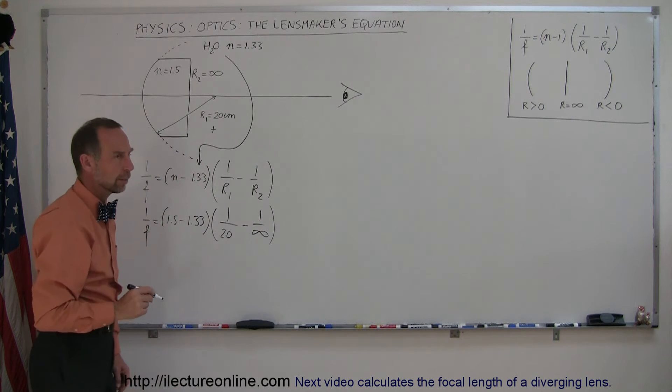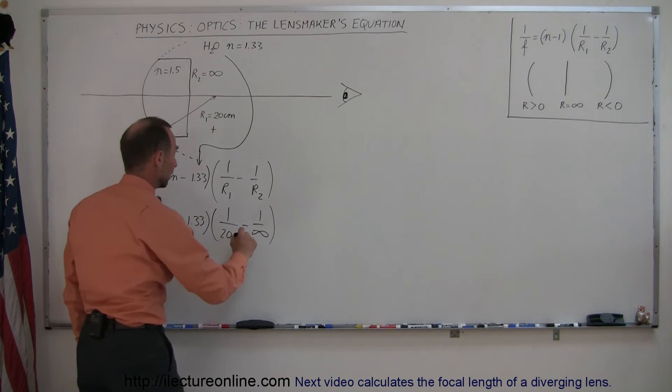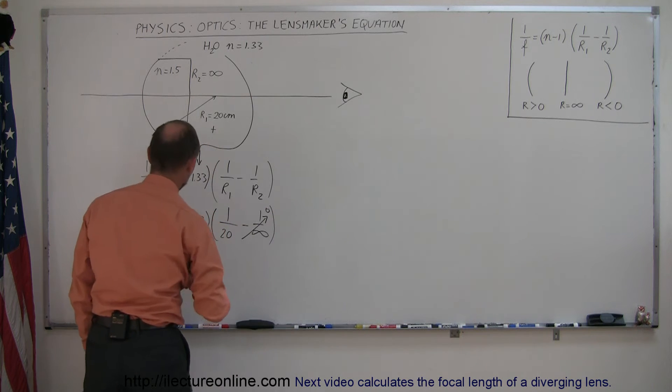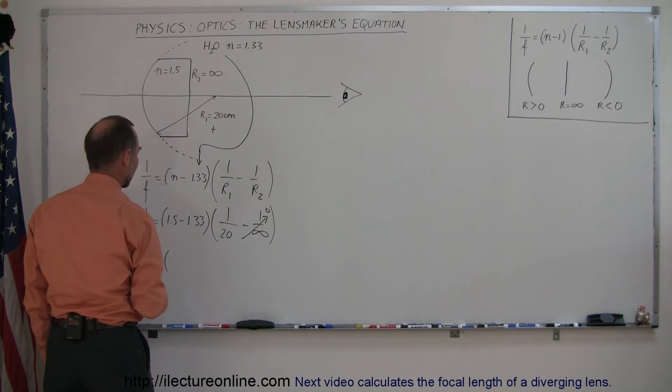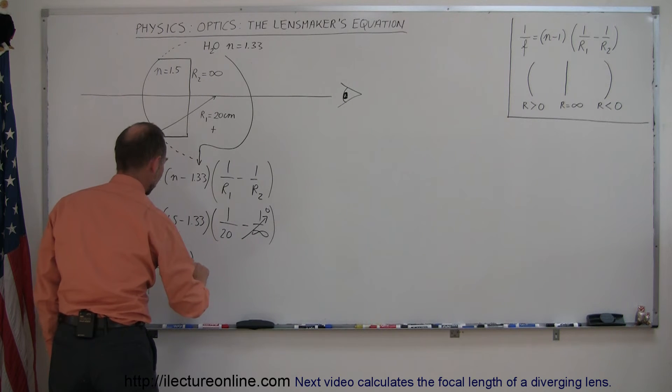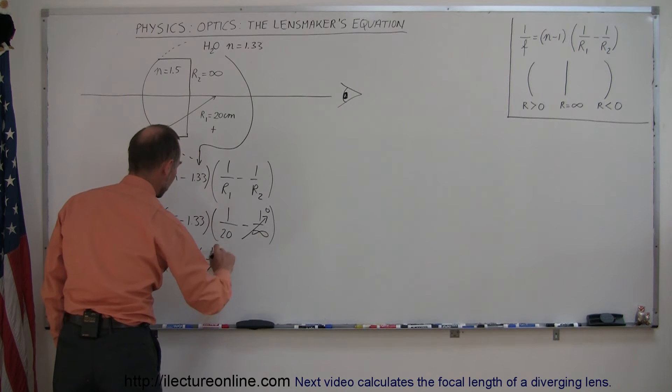1 divided by infinity is zero, so this term drops out. We have 1 over f equals 1.5 minus 1.33, which is 0.17, times 1 over 20.